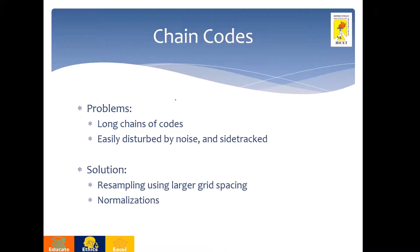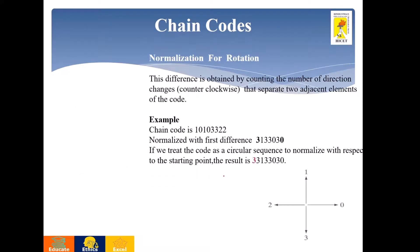The problem with chain code is that it has a long chain and it is easily disturbed by noise. For that, we have to find a solution which is normalization. Normalization is performed by finding the first difference, which is nothing but counting the number of counterclockwise directions between adjacent codes. For example, from 1 to 0, we count counterclockwise: 1, 2, 3. So 3 is mentioned.